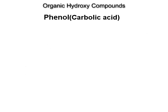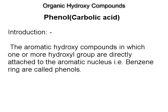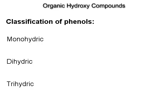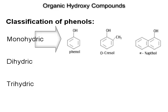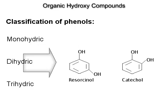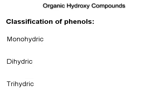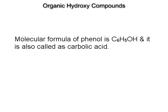Phenol, also known as carbolic acid. The aromatic hydroxy compounds in which one or more hydroxyl groups are directly attached to the aromatic nucleus, i.e. the benzene ring, are called phenols. Phenols are classified as monohydric, dihydric and trihydric depending upon the presence of one, two or three hydroxyl groups attached to the aromatic ring. Monohydric phenols include phenol, cresol and naphthol. Dihydric phenols include resorcinol and catechol. Trihydric phenols include phloroglucinol and pyrogallol. The molecular formula of phenol is C6H5OH.